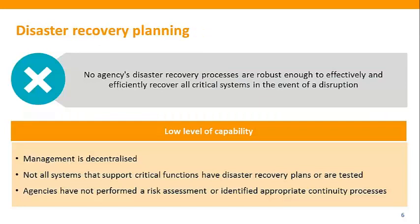We also measured agencies' disaster recovery processes against COBIT 5 and found their processes are not robust enough to effectively and efficiently recover all critical systems in the event of a disruption. The disaster recovery processes show low levels of capability. For example, management of ICT disaster recovery planning is decentralized and managed by individual divisions. Not all systems that support critical functions have disaster recovery plans or are tested, and agencies have not performed a risk assessment to determine which critical systems need a disaster recovery plan or identified appropriate continuity processes for when systems are unavailable.